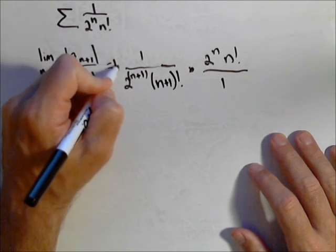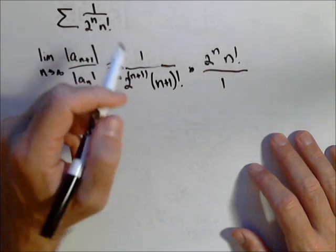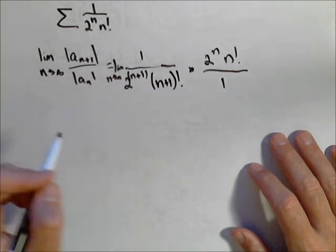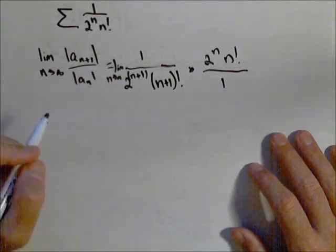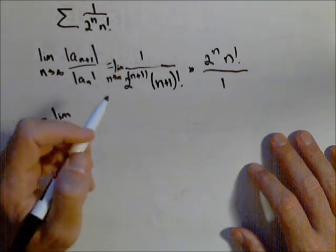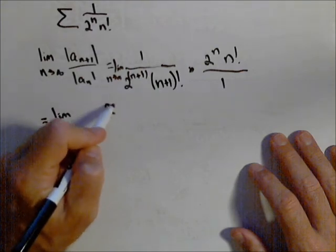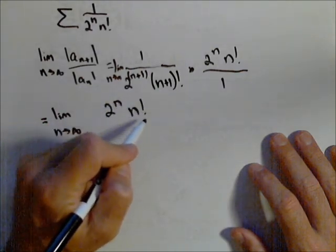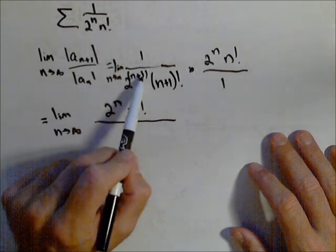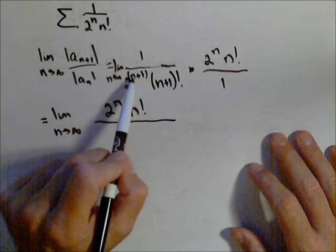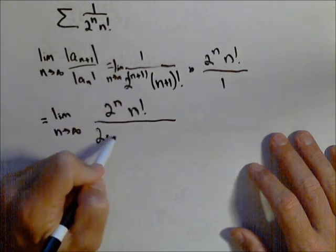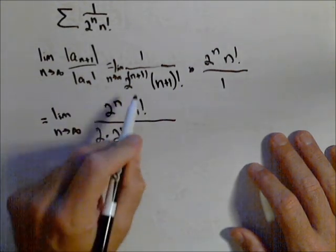We're going to take the limit as n goes to infinity, and since everything's going to be positive, we can drop the absolute value. By rewriting, we'll see some cancellations. Two to the n plus one can be split as two to the n times two to the one, or two times two to the n.